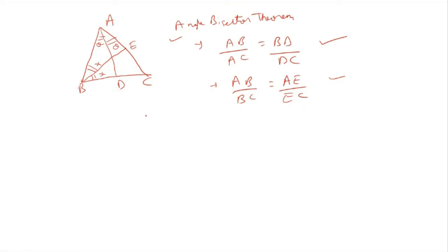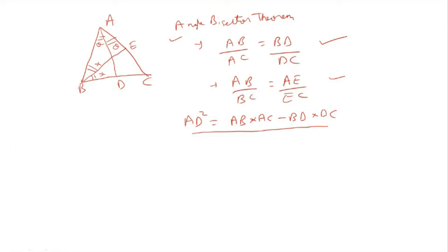The length of an angle bisector can be found using: AD² = AB·AC − BD·DC. Similarly, BE² = AB·BC − AE·EC. So if you know the side lengths, you can calculate the length of any angle bisector using this formula and then take the square root.